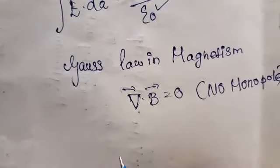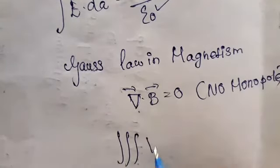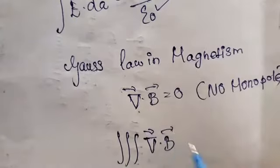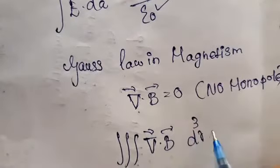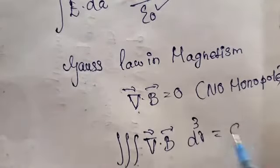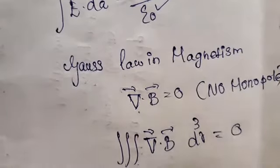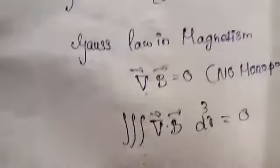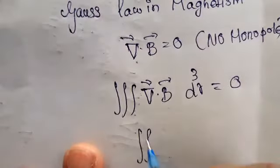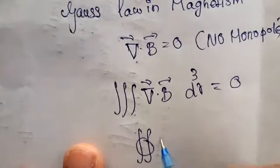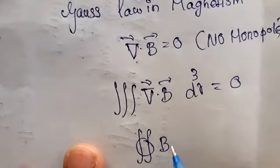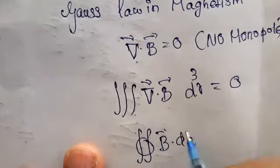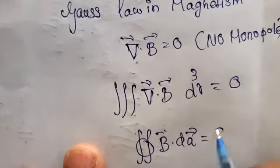Since the divergence of B equals zero, taking the surface integral gives: the closed integral of B vector dot dA vector is equal to zero. This is Gauss's law in magnetism.